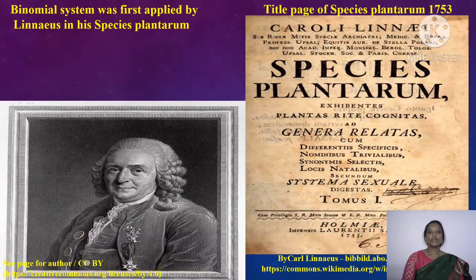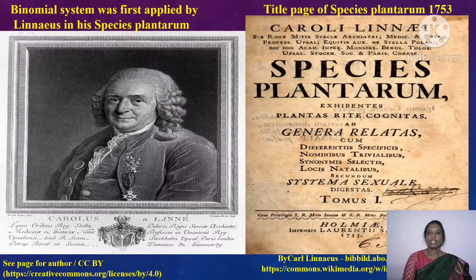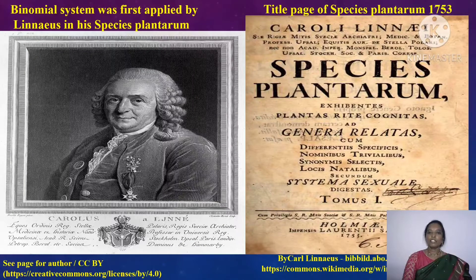This is the photograph of Carolus Linnaeus who first implemented the binomial system of nomenclature, and this is the book named Species Plantarum, in which he first used the binomial system of nomenclature for naming the plants.